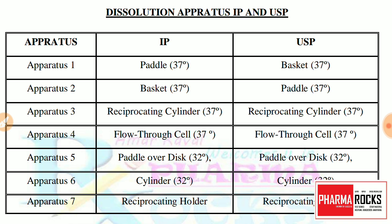In competitive exams, the question is mainly asked about the apparatus as per the IP and USP for the Dissolution study. The question is like: Dissolution test apparatus 1 as per the USP is which of the following — basket, paddle, reciprocating cylinder, or flow cell? So as per the IP, Dissolution test apparatus 1 is a paddle type, and as per the USP it is a basket type.